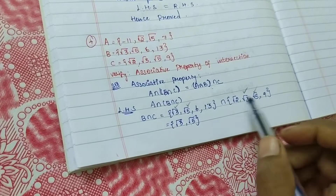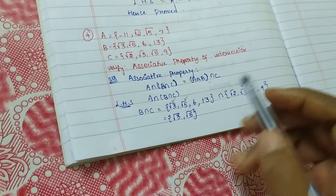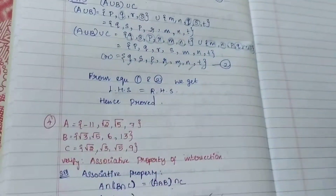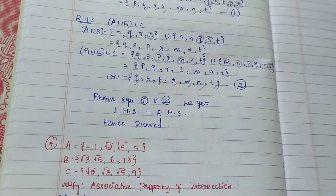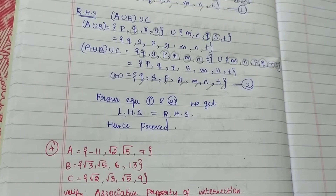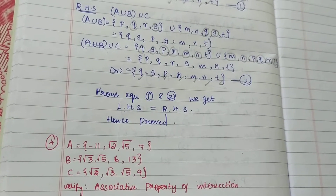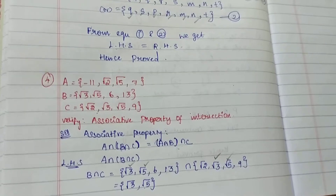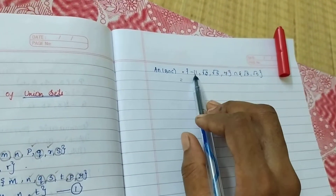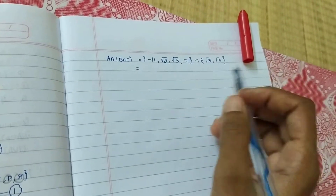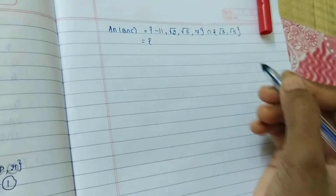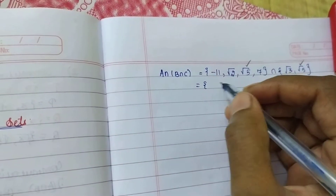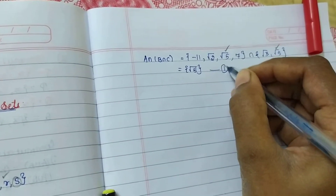Don't write the set values separately — compare these two sets and write only the common values. So what are the common values? Root 3, root 5, 7. What is B intersection C? Root 3, root 5. So I am going to intersect that with A. A value is this, and B intersection C we just found: root 3, root 5. So the common value here is root 5. This is my LHS first equation.